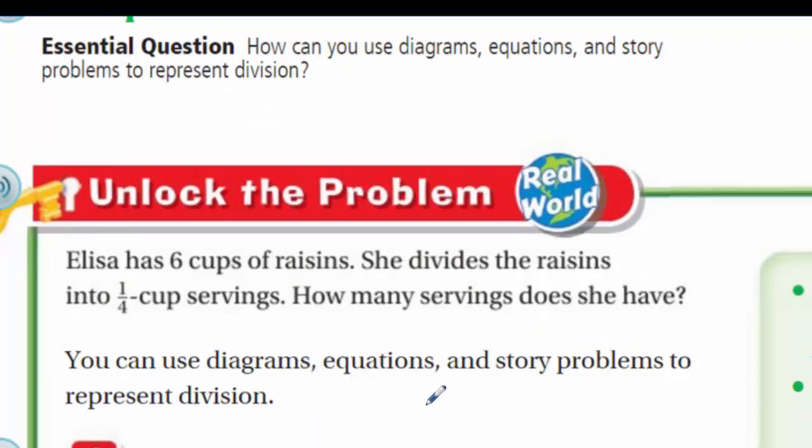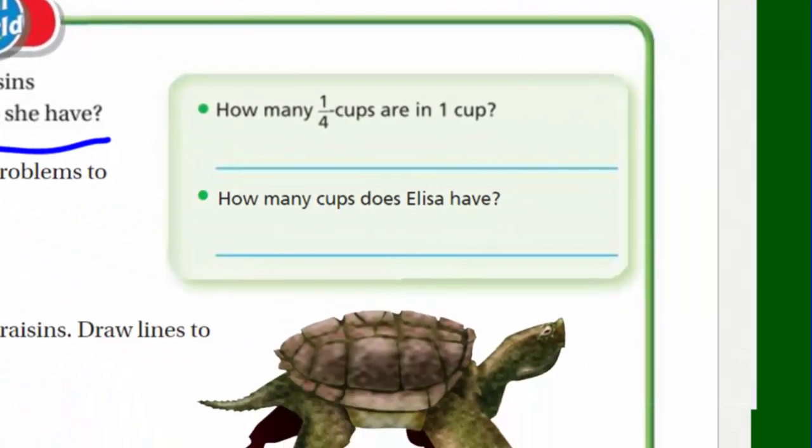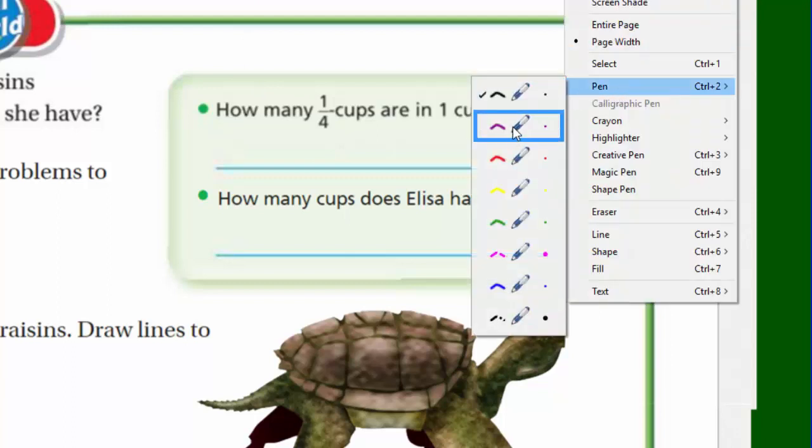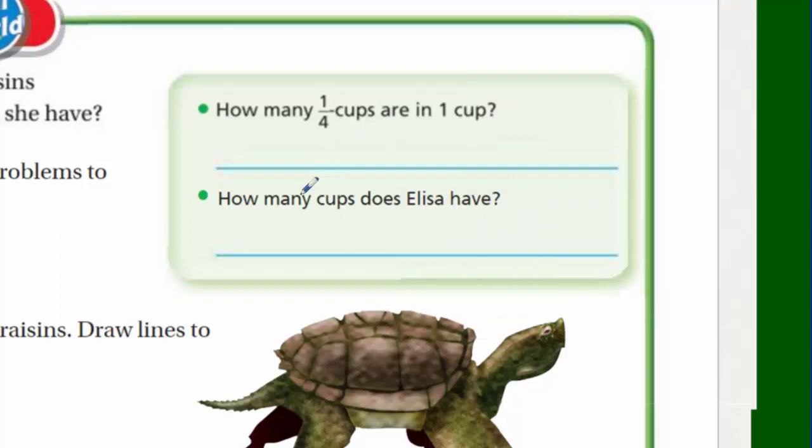Well, let's go ahead and unlock the problem here. It says, Alyssa or Lysa, Lysa has six cups of raisins. She divides the raisins into quarter cup servings. How many servings does she have? You can see that you can use diagrams, equations, story problems to represent division. The first question here says, how many quarter cups are in one cup? That may recall, that might make you think of another particular program.